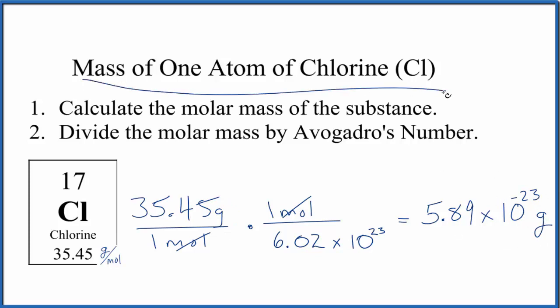If we wanted to find the mass of one atom of chlorine in kilograms, we would just divide 5.89 times 10 to the negative 23rd by 1000. That would give us 5.89 times 10 to the negative 26th. This all makes sense—this should be a really small number. Atoms are small, so they should have a small mass.